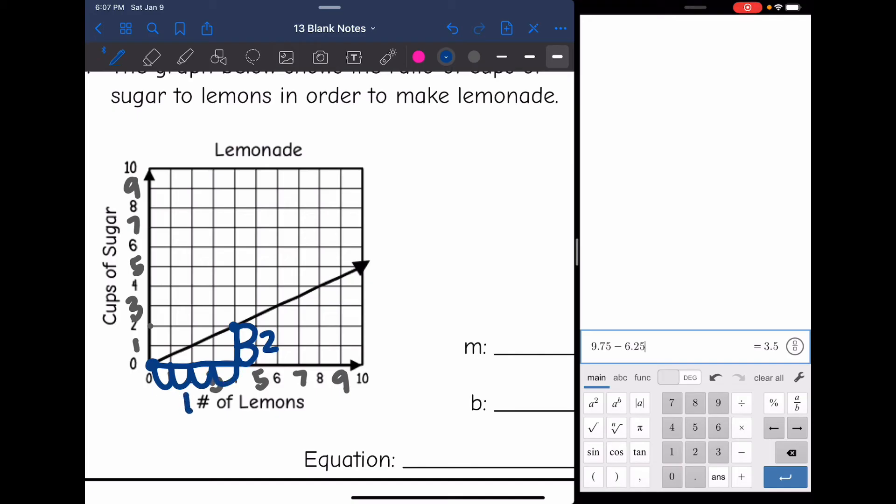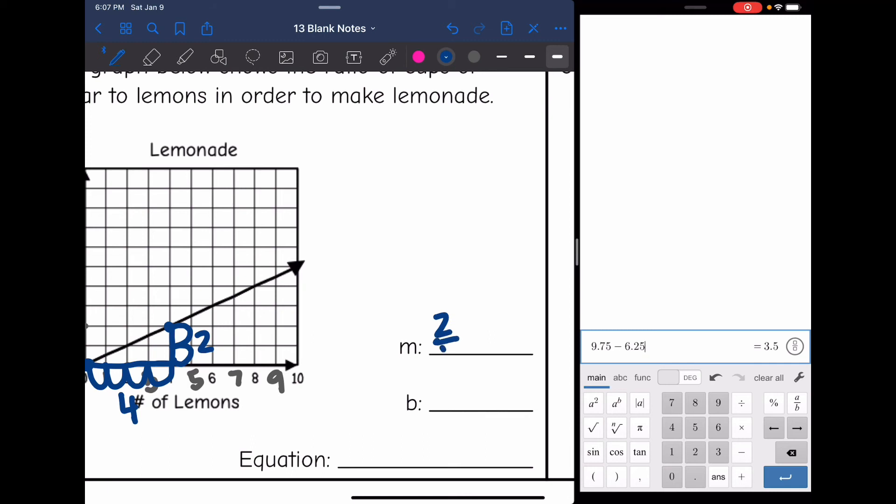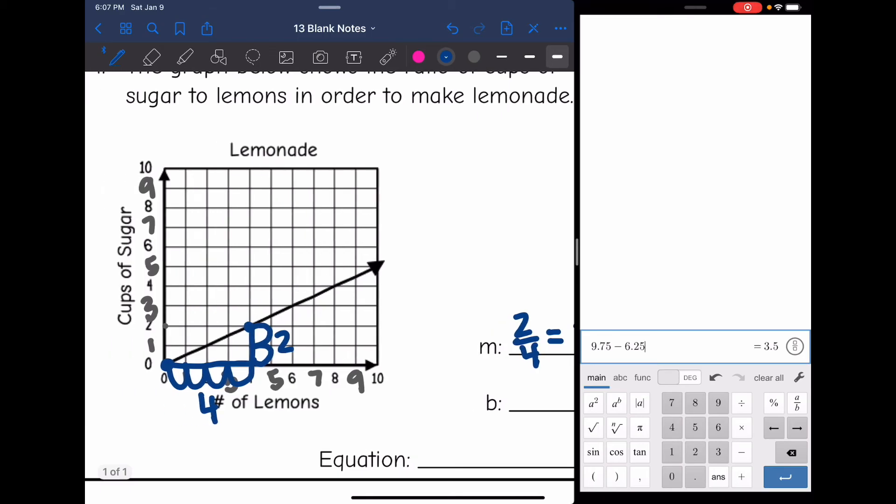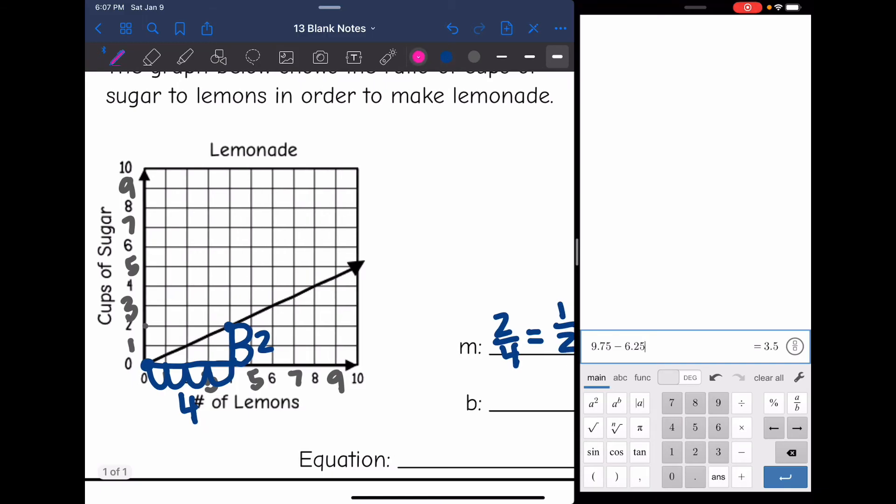So the slope is 2 over 4, which simplifies to 1 half. So that means for every 1 cup of sugar, you need 2 lemons. And then the y-intercept is just through the origin. So our y-intercept is 0. So our equation is just y equals 1 half x.